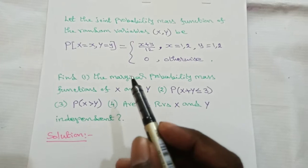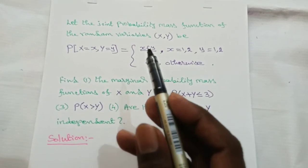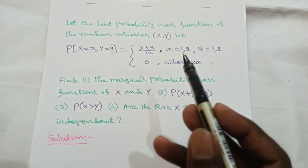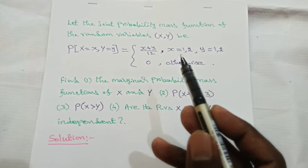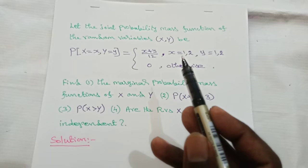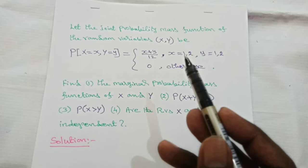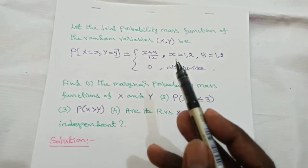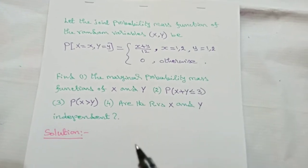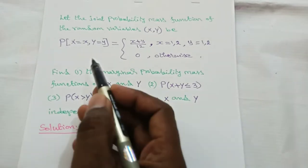The given joint probability mass function is (x+y)/12, where the random variables X and Y take values 1 and 2. These are discrete random variables because they have only a countable number of values — 1 and 2 — with no value between them. For discrete random variables, I want to form a table from the given probability mass function.